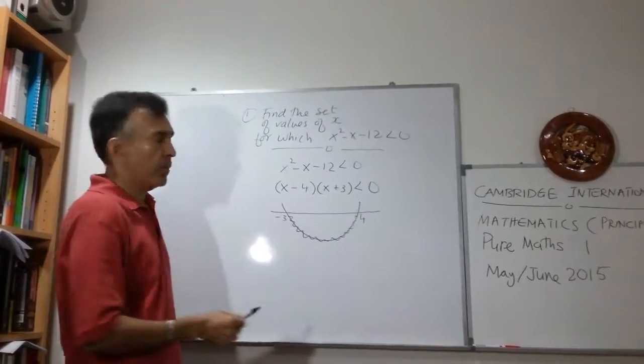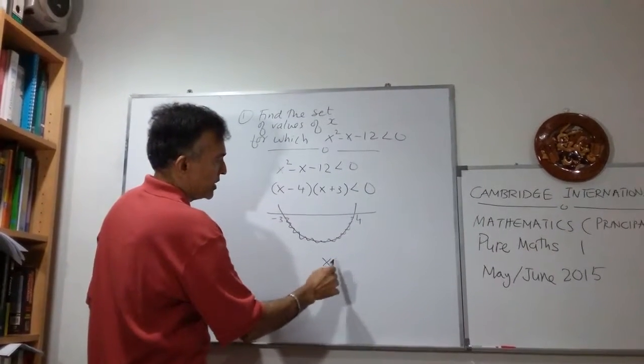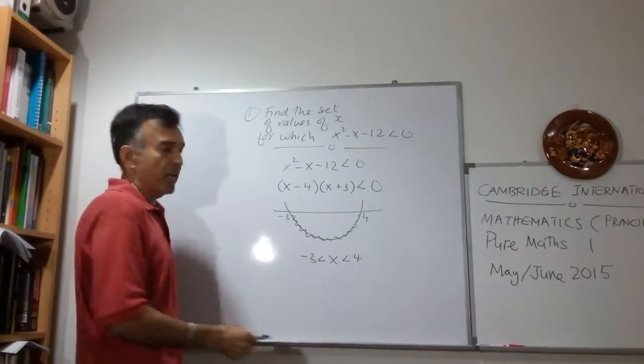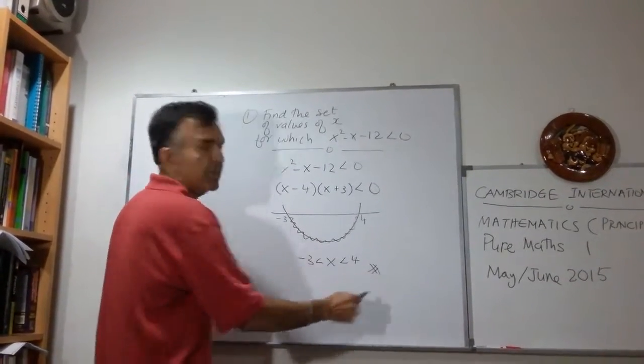So we can write down our answer straight away. x the line between 4 and negative 3. And we are done.